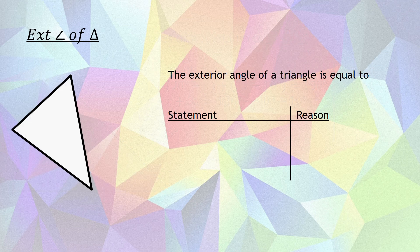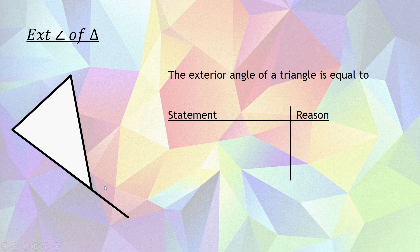The second reason we're going to work with in this video is the exterior angle of a triangle. The exterior angle of a triangle is formed when one of the sides of the triangle is extended. This outside part — that's the exterior angle of a triangle. That is equal to the sum of the interior angles. So for example, filling in some values, the exterior angle is equal to 2x plus 60.